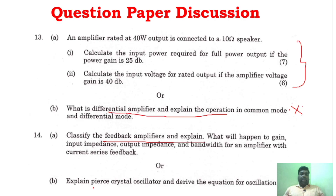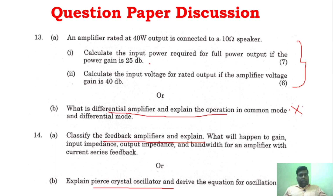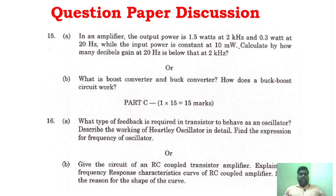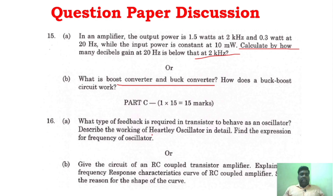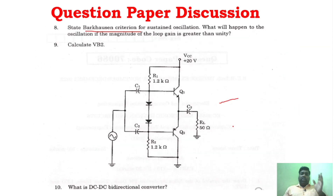Similarly, in part C you can see a Pierce crystal oscillator question from unit 4, and also a Hartley oscillator. There is also a buck-boost converter and buck converter question from unit 5. Now you understand why I keep saying problems are important. You can also see an RC coupled amplifier question in part C. This concludes the discussion of the November-December 2022 question paper.